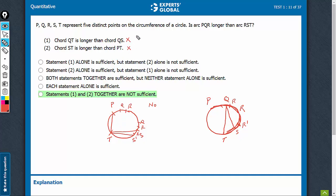On combining, in this case when Q is here, QT is longer than QS and PQR is bigger than RST. So we're getting yes as an answer.